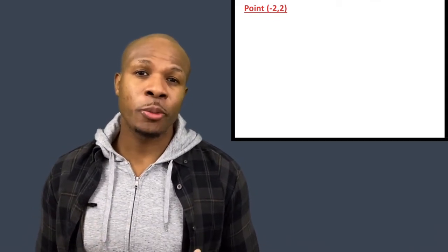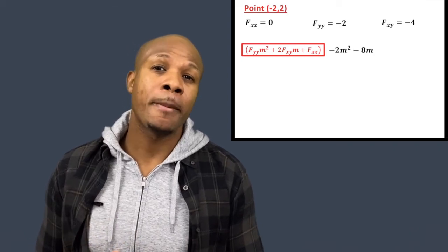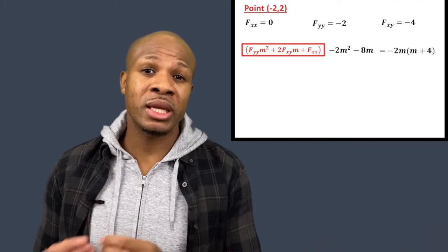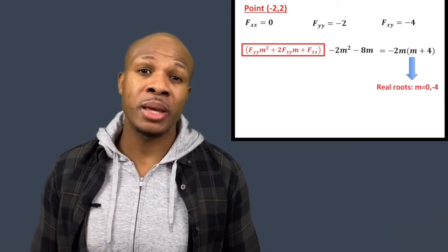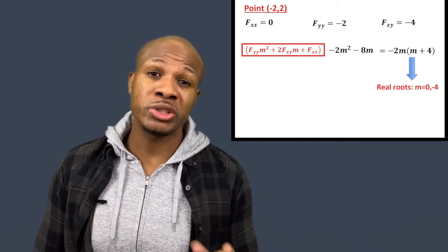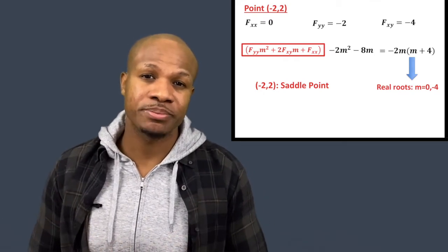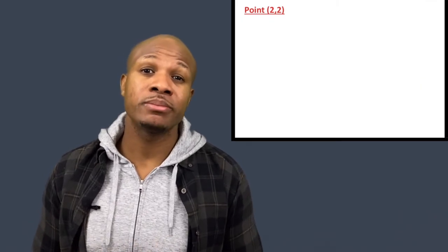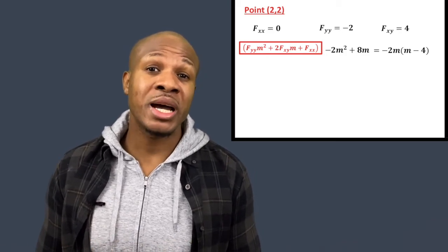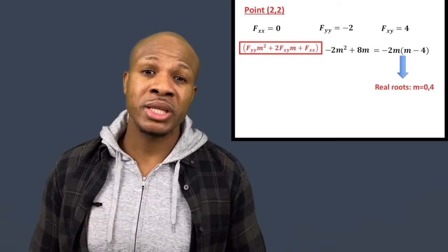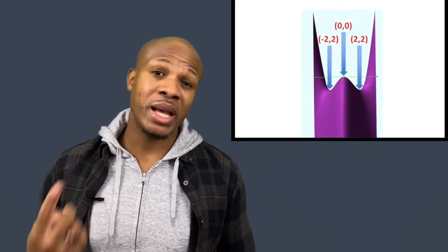For point (−2, 2), the polynomial becomes −2m² − 8m, which factors as −2m(m + 4). The roots are m = 0 and m = −4 — two distinct real roots — so this polynomial alternates sign, meaning (−2, 2) is a saddle point. For point (2, 2), the polynomial is −2m² + 8m, which factors as −2m(m − 4). The roots are m = 0 and m = 4 — again two real roots — so (2, 2) is also a saddle point. In summary: one maximum at (0, 0) and two saddle points at (±2, 2).